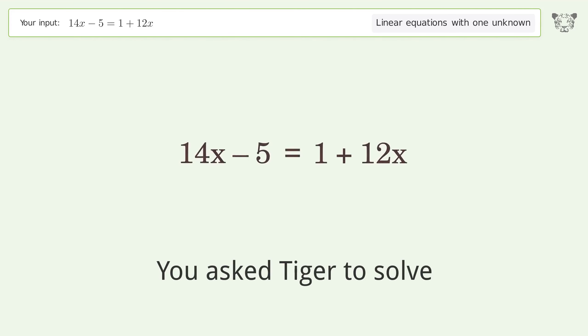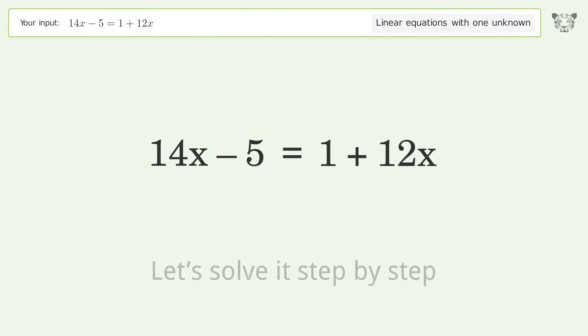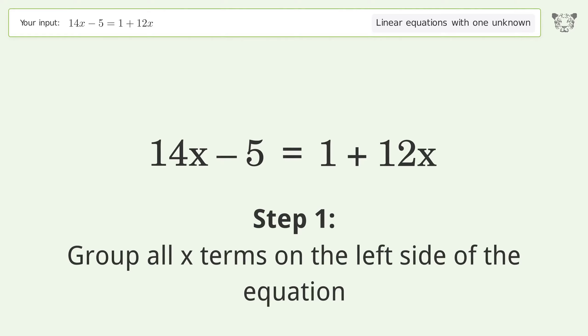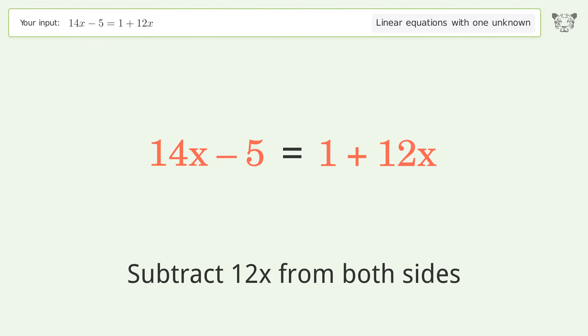You asked Tiger to solve this. This deals with linear equations with one unknown. The final result is x equals 3. Let's solve it step by step. Group all x terms on the left side of the equation. Subtract 12x from both sides.